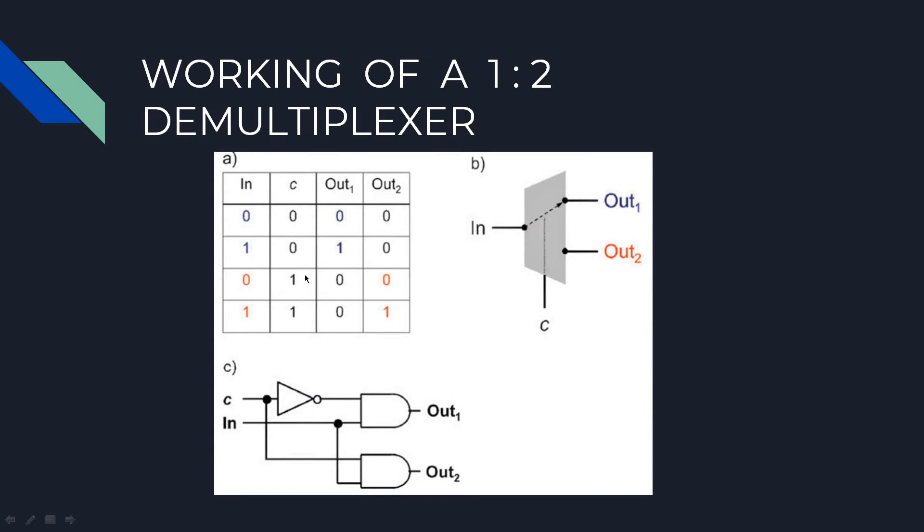Same way if your selection line is high or 1, your input In is going to output 2. You can see that the input In is 0 or 1, so the output is going to be 0 or 1. Whereas your output 2 in the first case will be 0, and output 1 in the second case will be 0.